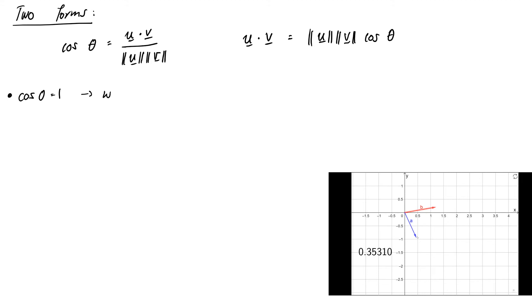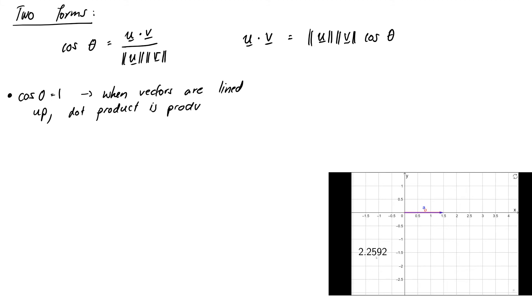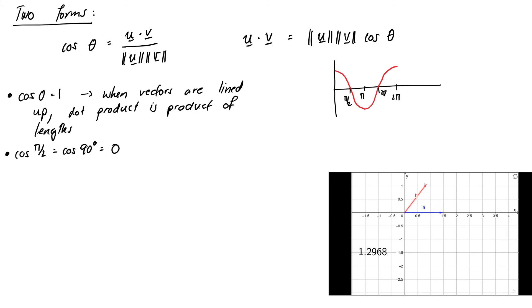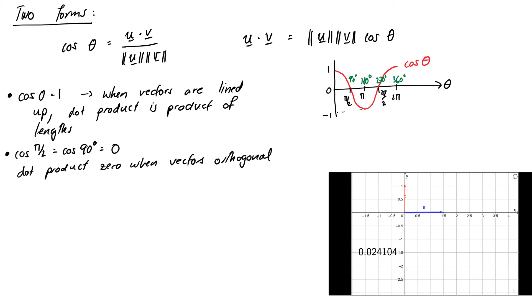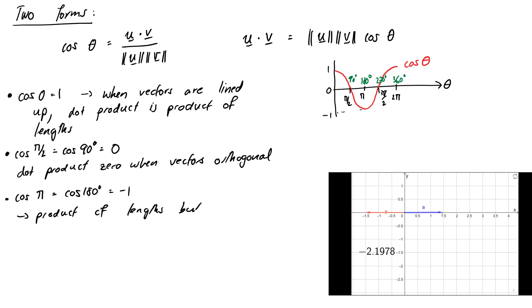When theta equals 0 and the angle is 0, the dot product ought to be the product of their lengths, because cosine theta is going to be 1. So for example, if my two vectors are completely lined up at length 1.5, then the dot product is indeed 1.5 squared, or 2.25. It also says that cosine of π/2 — so if our vectors are 90 degrees, which is π/2 apart — then the dot product will be equal to 0. If I continue on, cosine of π, which is 180 degrees, is −1. So if my vectors are pointing in opposite directions, the dot product should be the product of their lengths again, and again it is, except we now have a negative sign added in.